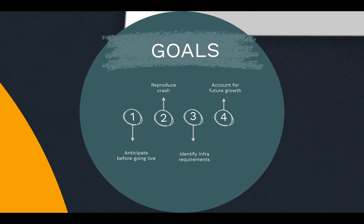Those are the performance testing goals. In a project, these are the typical goals for which performance testing is done. The first one is to anticipate before going live — before we go live on production, we anticipate that we will be receiving some number of users load, then do the performance testing to anticipate that load and the application behavior, so we have a fair idea of how the application will behave.